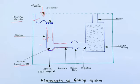The next element is the skim bob. This is a semi-circular cut given to the runner for separating the impurities present in the molten metal.